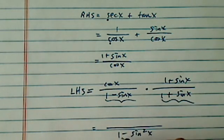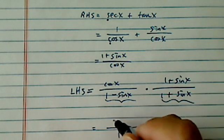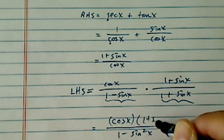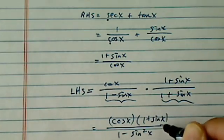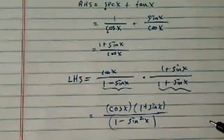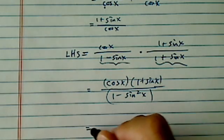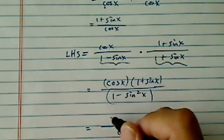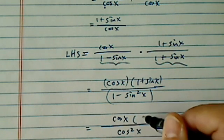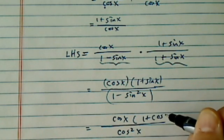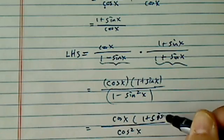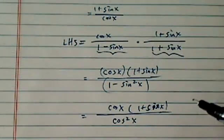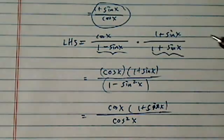The reason I want to go there is because 1 minus sine squared X, using the difference of squares — A plus B times A minus B equals A squared minus B squared — I artificially created 1 minus sine squared X, which using the trig identity equals cosine squared X. Now I have cosine X on top and 1 plus sine X in the numerator as well.